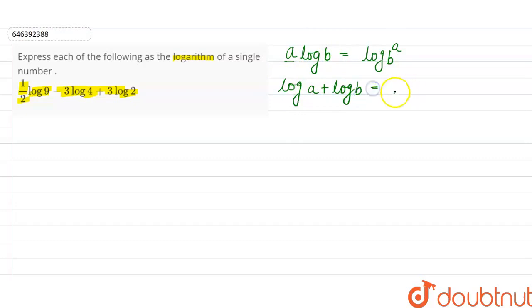And log a plus log b becomes log a into b. Right? And log a minus log b is equal to log a over b. Okay? We will use these 3 formulas in our question.